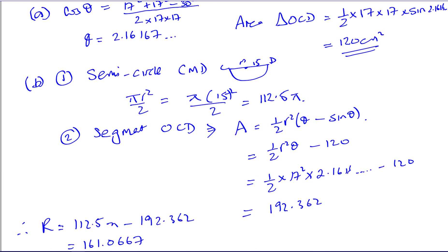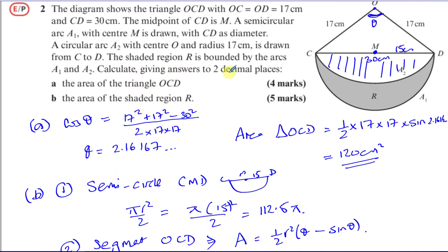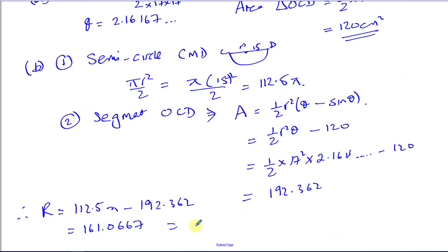Let's see how they ask us to round our answers. It says, calculate giving the answers to two decimal places. So the area of the shaded region, you need to give to two decimal places, which is 161.07 centimeters squared. So that's the answer.